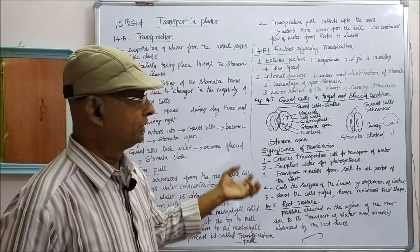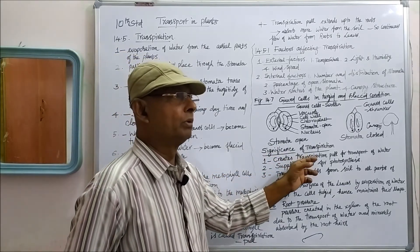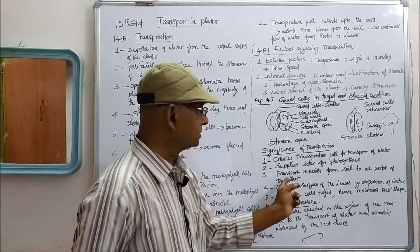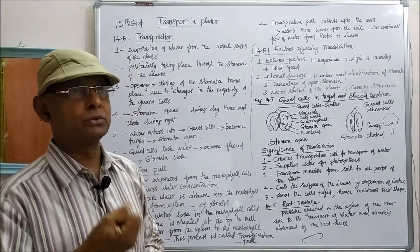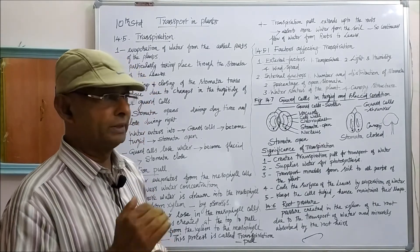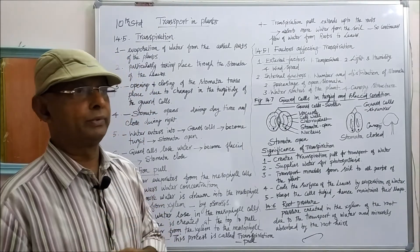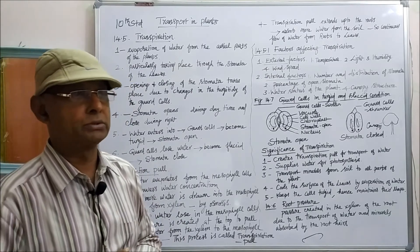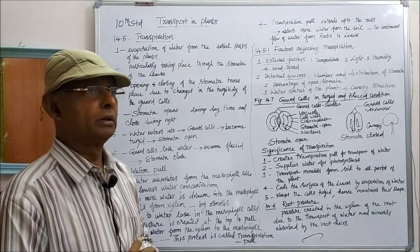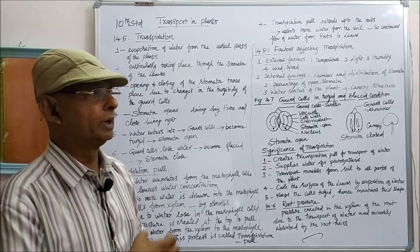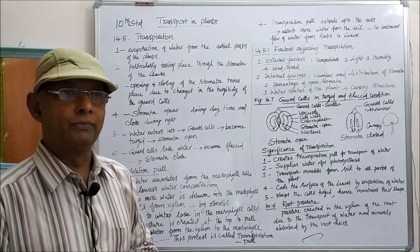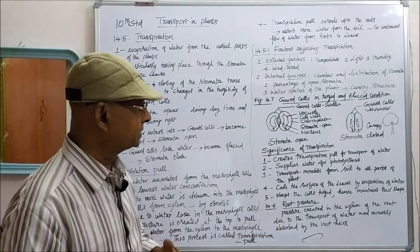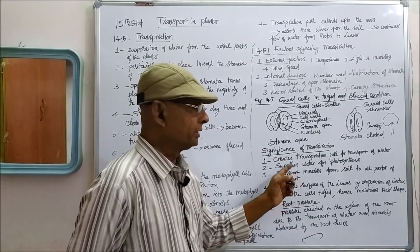Transpiration pull is created, which absorbs more water and supplies it to the leaves for photosynthesis. Third, transpiration transports minerals from the soil to all parts of the plant. Along with water absorption, the root hairs also absorb minerals from the soil. During transpiration, transpiration pull is created in the mesophyll tissue, which sucks water from the stem and roots, and the root hairs continuously absorb water and minerals from the soil.